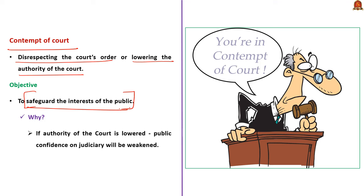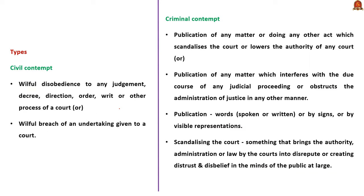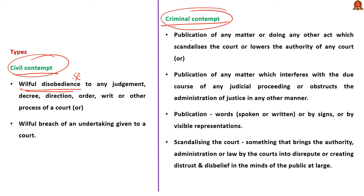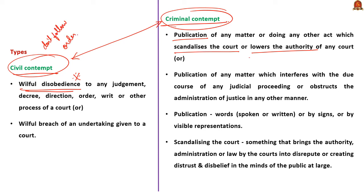There are two types of contempt of court: civil contempt and criminal contempt. Civil contempt means willful disobedience to any judgment, decree, or direction of court. Criminal contempt means publication of any matter or any other act which scandalizes the court or lowers the authority of court. The difference is that in civil contempt, the order of the court is not followed, while in criminal contempt, the authority of the court is lowered.